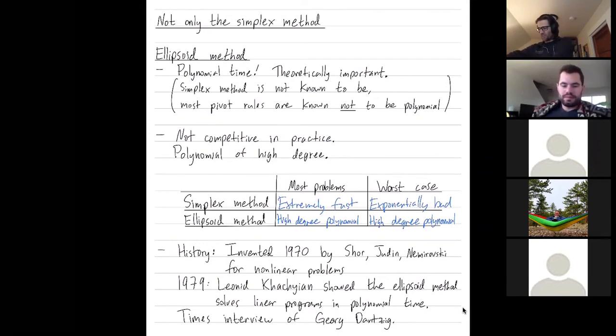This was still like, tensions of the Cold War, Russia versus the US. So there's this funny Times interview where the writer, Brown, is interviewing Dantzig. Dantzig was at Stanford at the time. So Dantzig sort of represented maybe the US school of linear programming. Dantzig invented the simplex method.